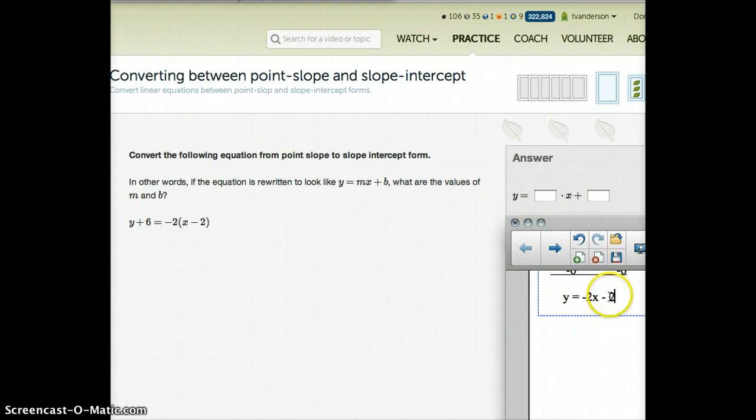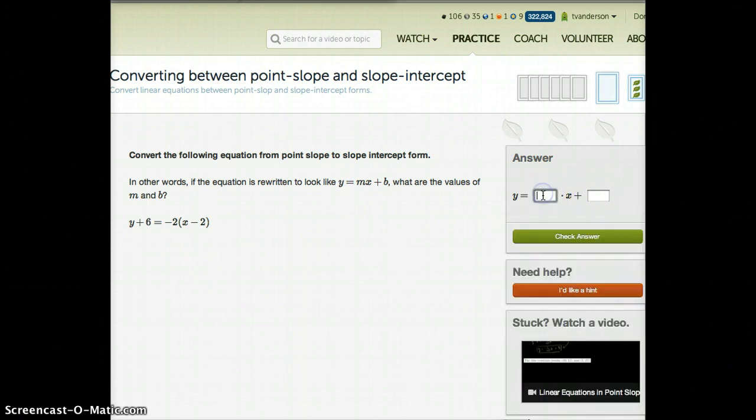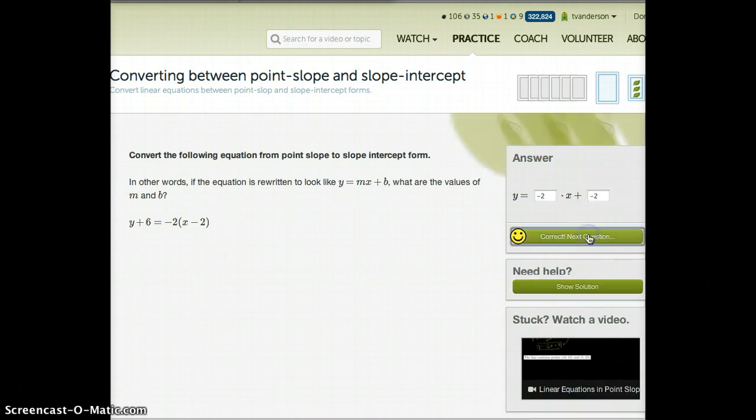I need a negative 2, which comes from here for the slope. Then I need an additional negative 2, which is also in this case the y-intercept. So negative 2, negative 2, and we've got our answer.